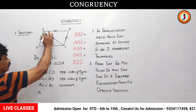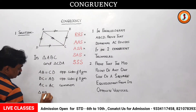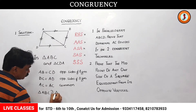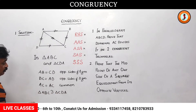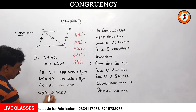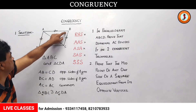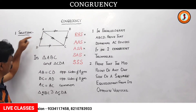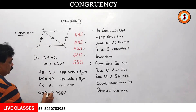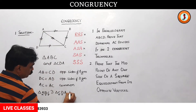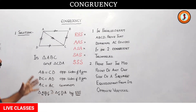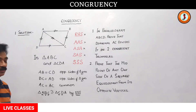Triangle ABC is congruent to triangle CDA. We have to write the vertices carefully and check correspondence: A lies between the one-dash and three-dash sides, as does C. B lies between the one-dash and two-dash sides, as does D. C lies between the two-dash and three-dash sides, as does A — all correct. They are congruent by SSS, and once congruent, all the remaining corresponding parts are equal by CPCT.